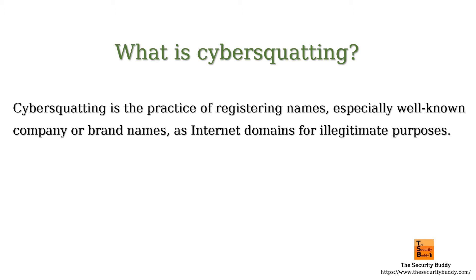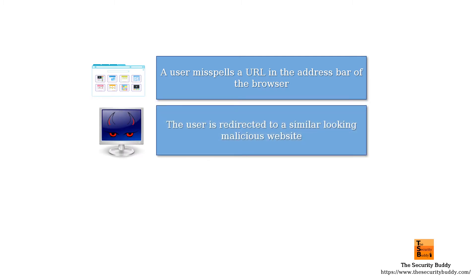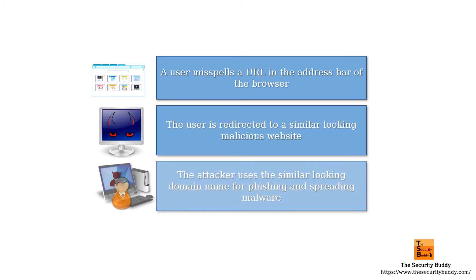In typosquatting, attackers usually rely on typos made by users while they type the domain name in the address bar. The attackers register a domain name that looks similar to a legitimate domain name, or looks like a common misspelling of a legitimate domain name, and use that illegitimate domain for phishing or spreading malware.